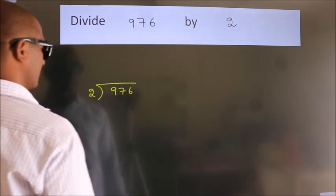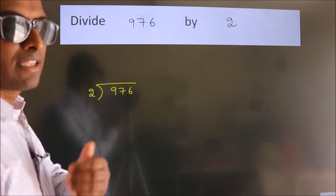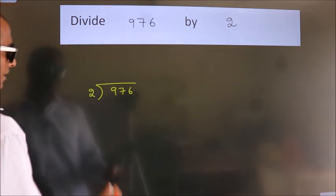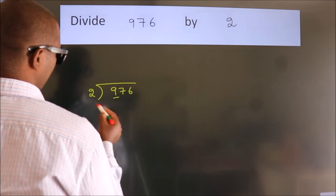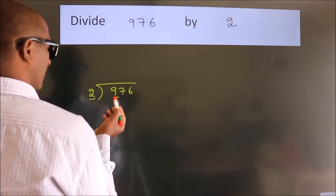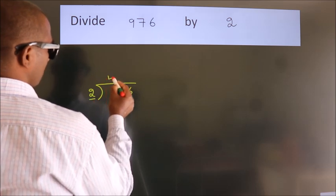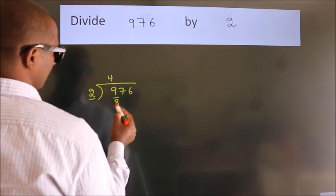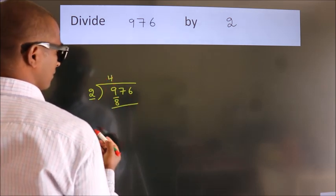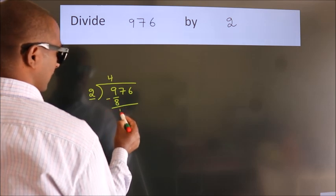This is your step 1. Next, here we have 9, here 2. A number close to 9 in the 2 table is 2 fours, 8. Now we should subtract. We get 1.